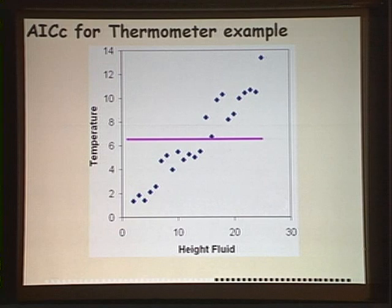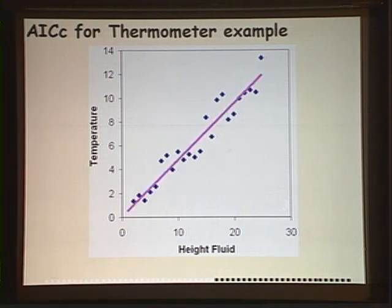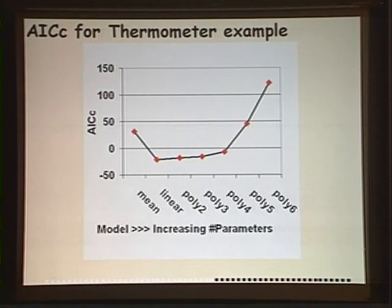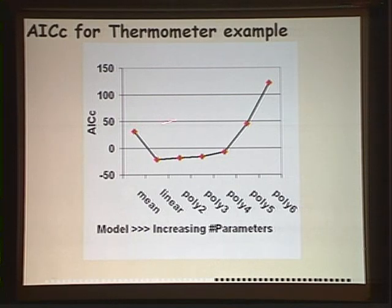Let's look at the AIC values for our thermometer example. We might have the mean to represent that data — we know they don't like that. There's the straight line, and stepping through the second, third, fourth, fifth, and sixth order polynomials, you can see the linear model is clearly the winner. The next two order polynomials aren't bad since they were close to a straight line anyway.